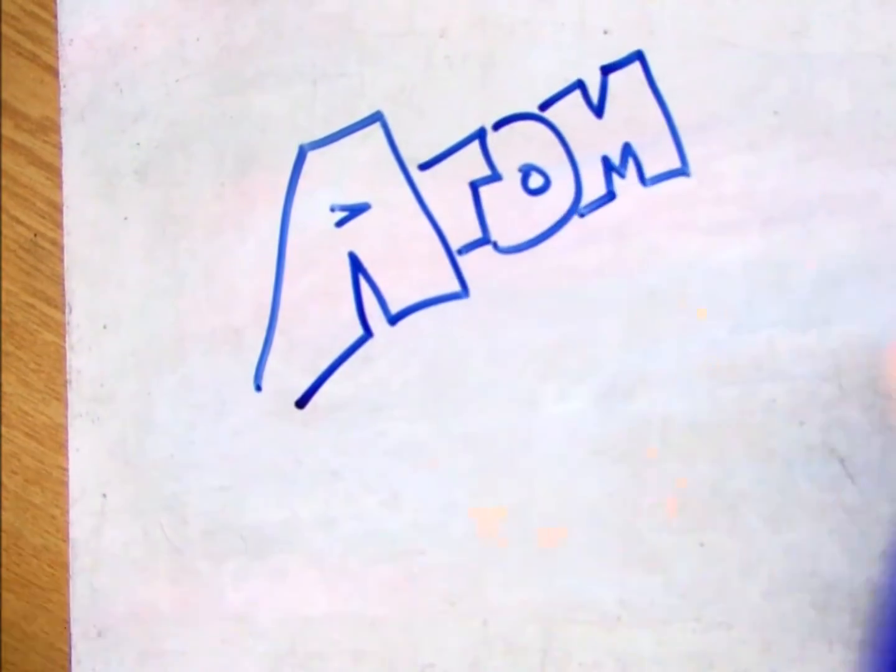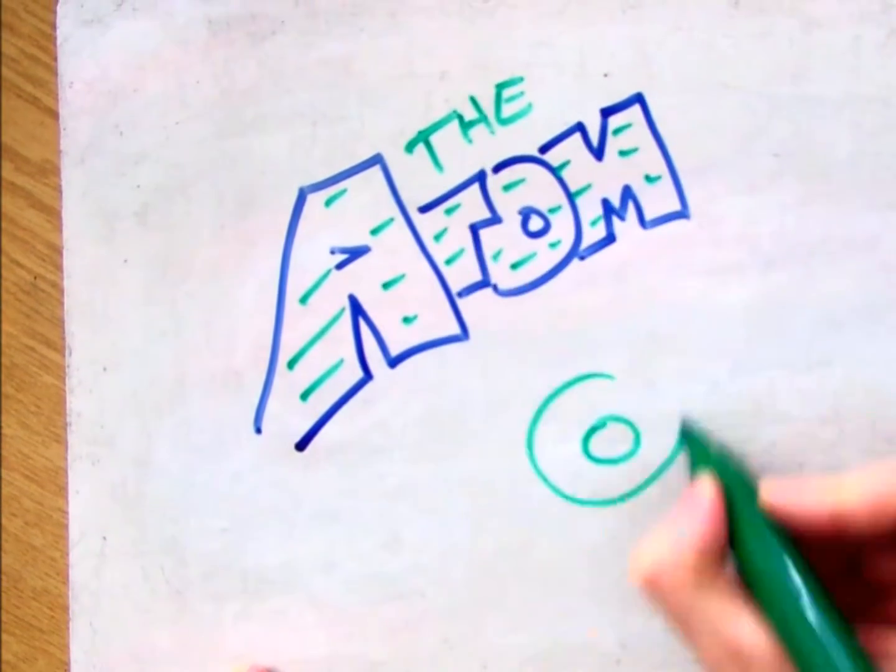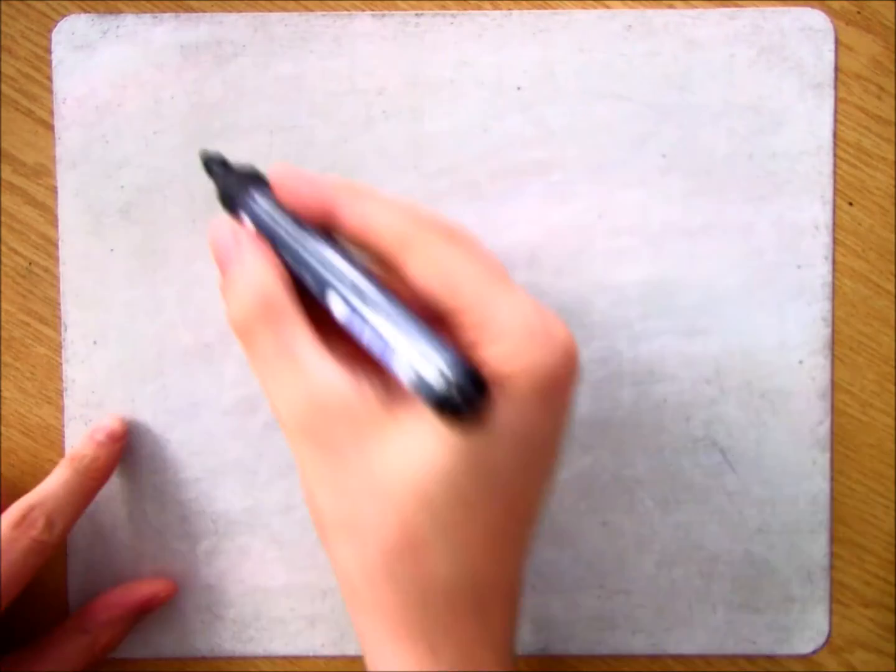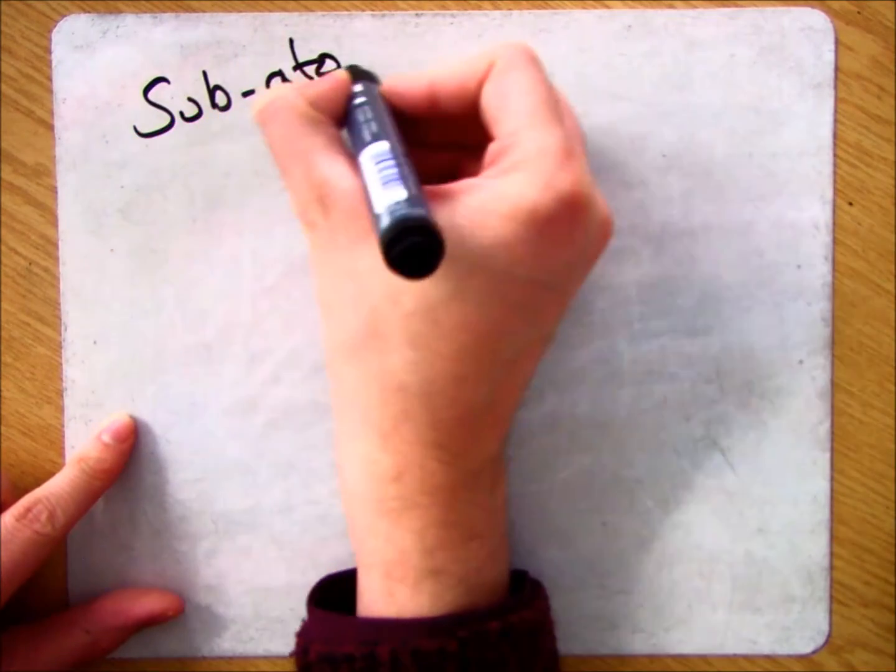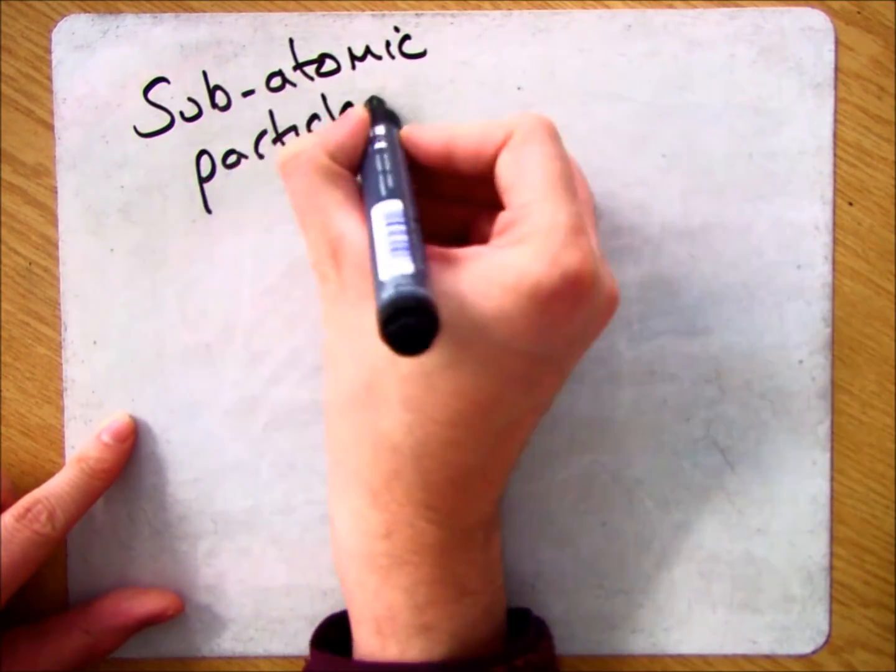This video is going to focus on the atom and the subatomic particles that make it up. So in the atom, we have three different subatomic particles.